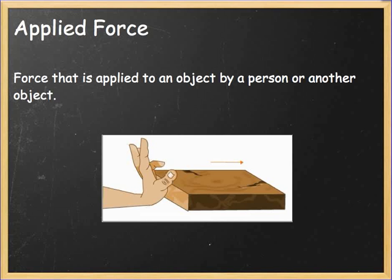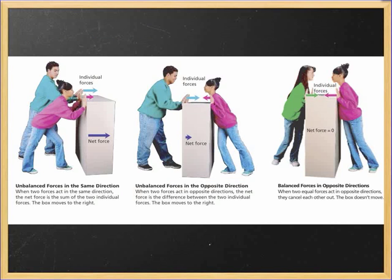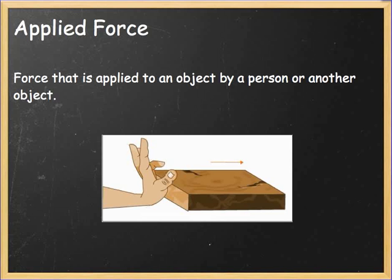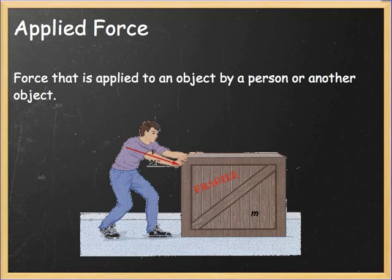We're going to talk about each kind of force. Looking at this picture, we can see they are pushing on a box. This is called an applied force — when you apply force to an object or another person, that is an applied force, a force applied to an object. This guy trying to move the box: the box has a mass, he is applying a force, and that force is shown with an arrow. You'll see lots of those over the next couple of weeks.